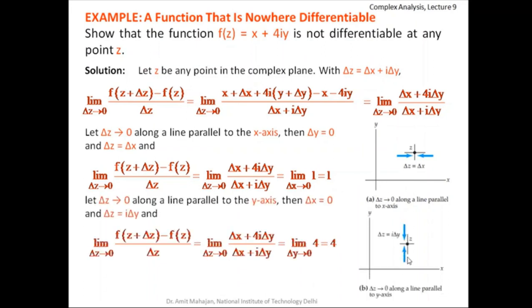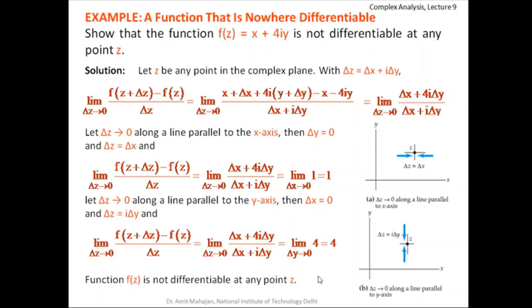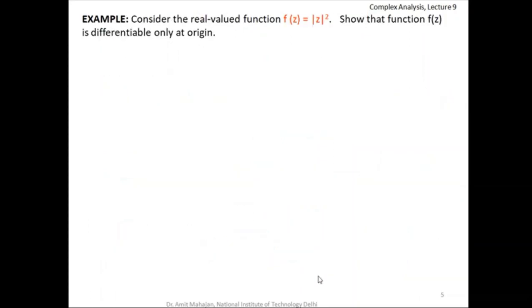Similarly, path two: along the vertical direction, Δx = 0 and Δz = i·Δy. The numerator becomes 4i·Δy and the denominator is i·Δy, so the ratio is 4i·Δy / i·Δy = 4, and as Δy → 0 the limit is 4. The limit along the horizontal is 1, and along the vertical is 4. Since these two limits are different, the overall limit does not exist, and the function f(z) = x + 4iy is not differentiable at any point z.